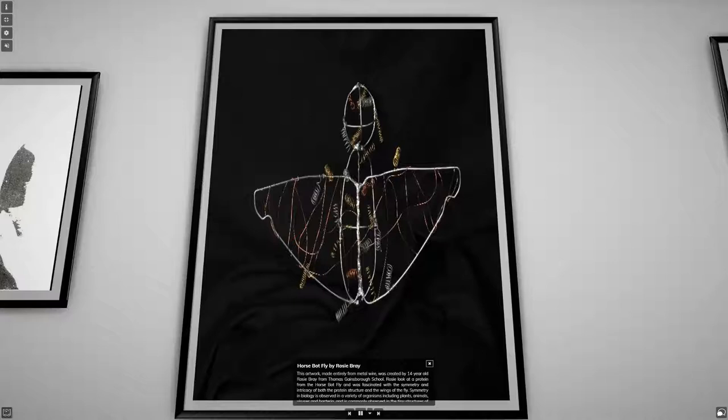Symmetry in biology is observed in a variety of organisms, including plants, animals, viruses and bacteria, and is commonly observed in the tiny structures of proteins. She uses the empty space in the piece to represent how she would imagine the human body without proteins, describing it as a dull, hollow, lifeless carcass, highlighting the importance of proteins in life.